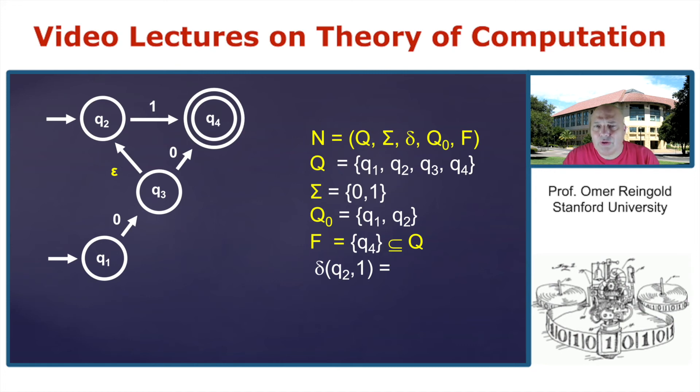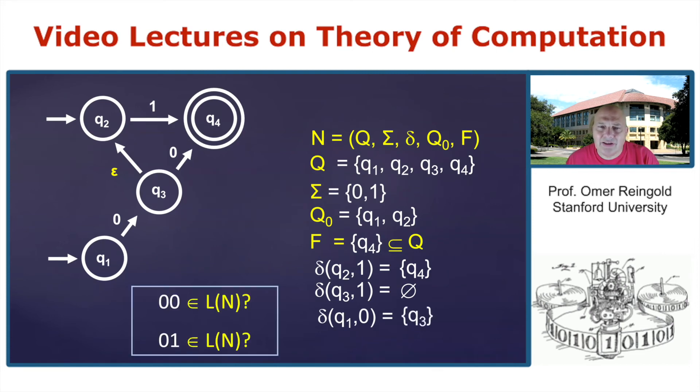And to define it again for every state and for every symbol, we're going to define a subset of states you can move to. So delta of Q_2 and one, given that you're at Q_2 and you read one, which states you can get to? Well, there is a single state. You can only reach Q_4. Delta of Q_3 and one, what can you do? You cannot do anything. With one, there is no transition. So you've reached the empty set of states. Delta of Q_1 and zero contains Q_3 and so on and so forth.